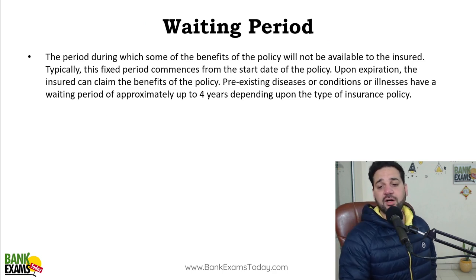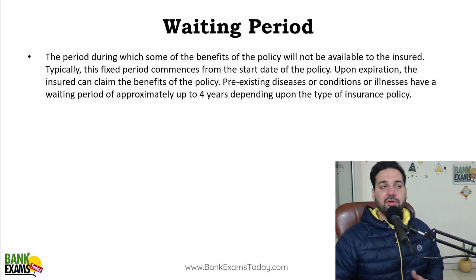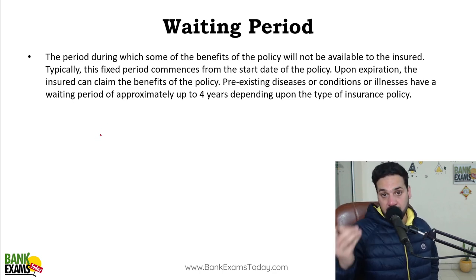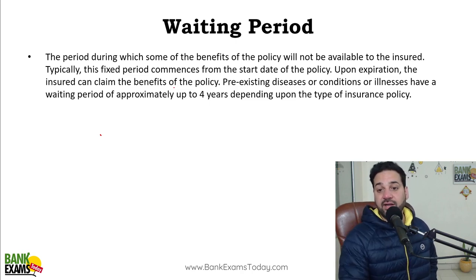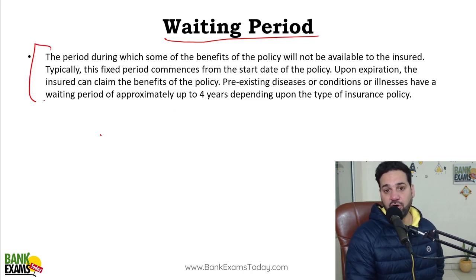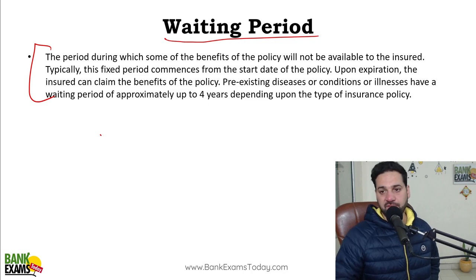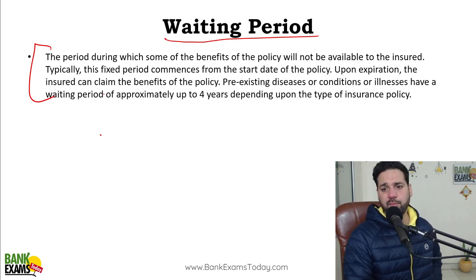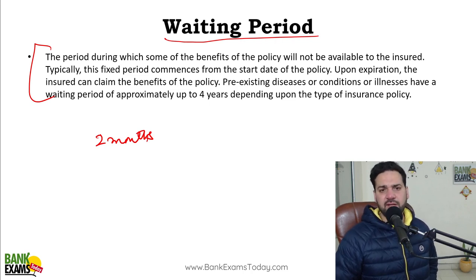Waiting period: you have got a health insurance policy, but there are certain diseases for which you cannot take a claim within the first two years — it depends from one company to another. Some companies do not provide a claim for cataract treatment for the first two years; some do not provide it for one year. So there is a waiting period during which the benefit won't be available. For example, if your policy is just two or four months old and you need a claim for cataract surgery, you won't get the claim.